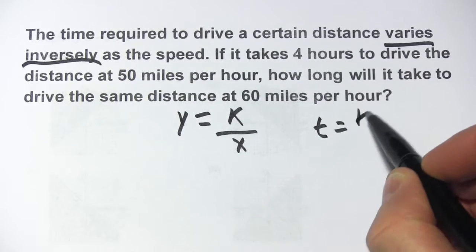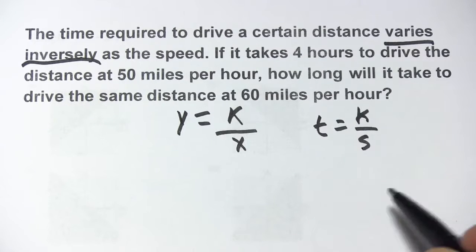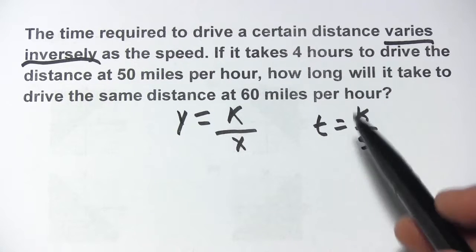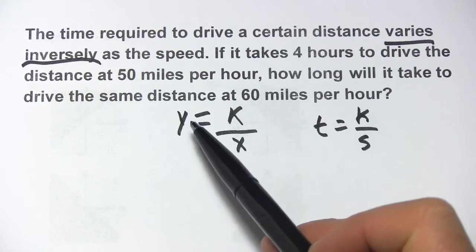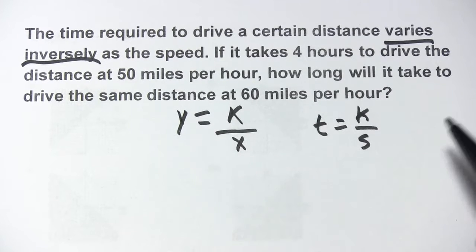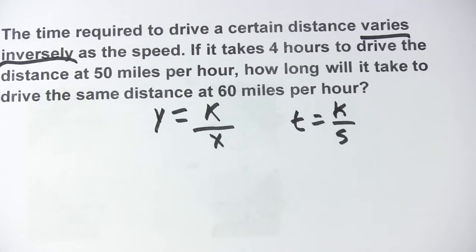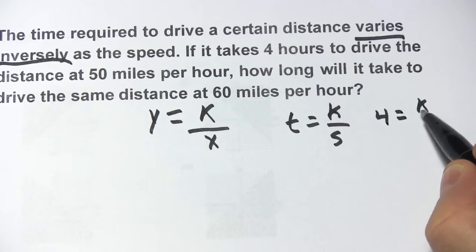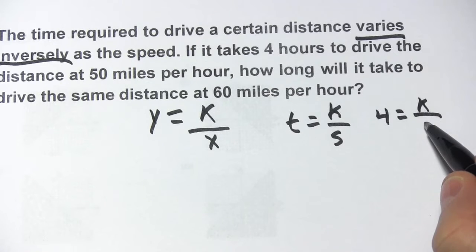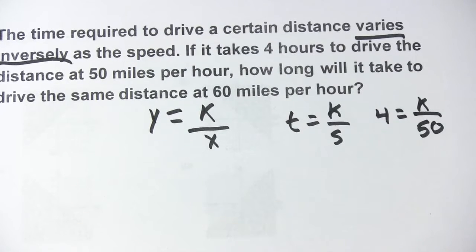So time varies inversely with speed. It says it takes 4 hours to drive the distance at 50 miles per hour. So we have time and speed, we can figure out our constant of variation. So it takes 4 hours at 50 miles per hour.